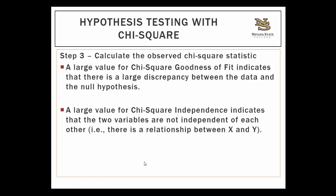If you calculate a large chi-square statistic in step three, for goodness of fit this suggests a very large discrepancy between the proportions in the data and the proportions in the null hypothesis — either a very unequal distribution across groups, or that the proportions in your sample do not match the proportions in your population. If you calculate a large chi-square test for independence, then that suggests there is a stronger relationship between the two variables — they are dependent on each other, not independent.